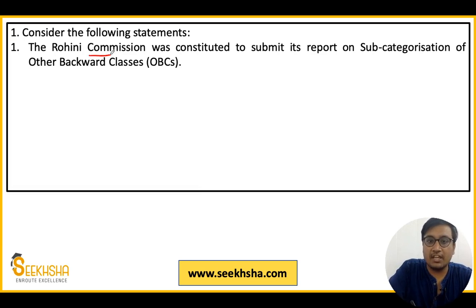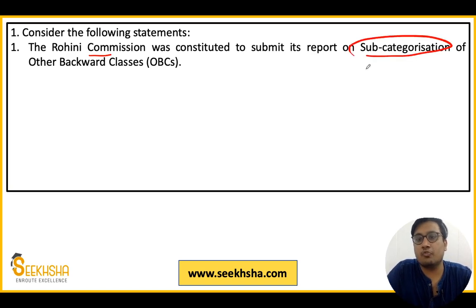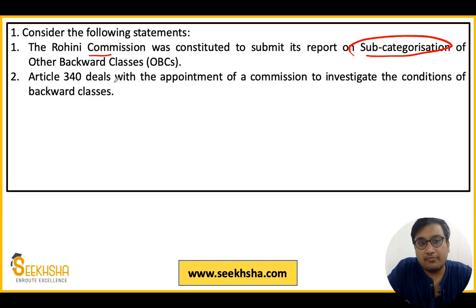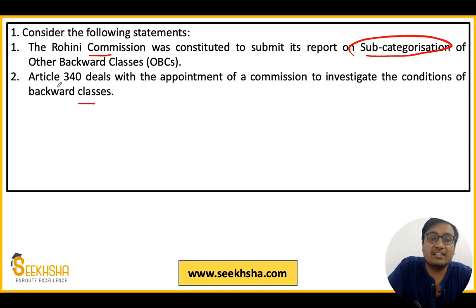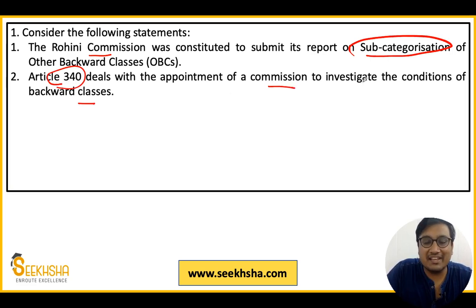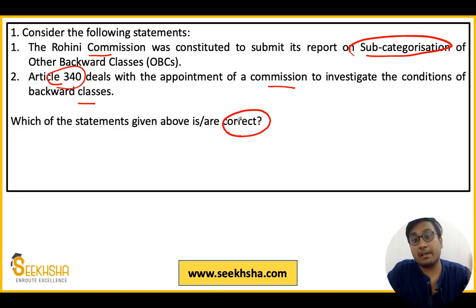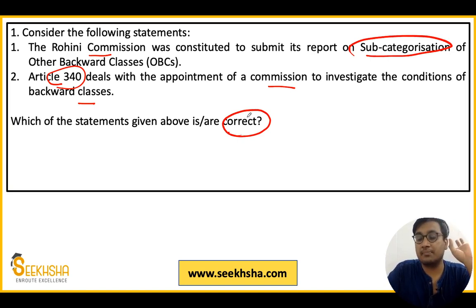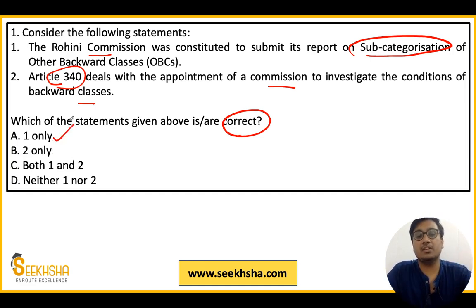So let us start. Here is the first question. Some statements are given. Statement one says that the Rohini Commission was constituted to submit its report on sub-categorization of OBCs. Statement two says that Article 340 deals with the appointment of a commission to investigate the conditions of backward classes.